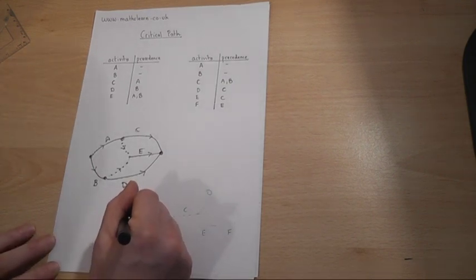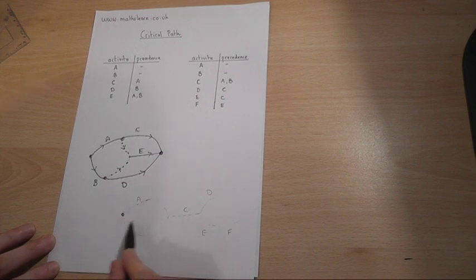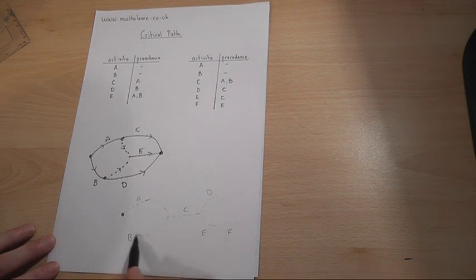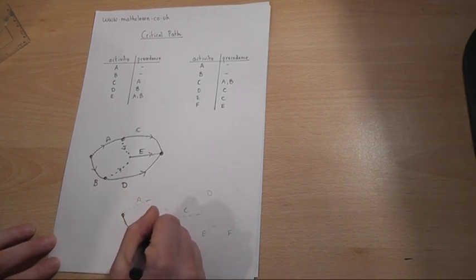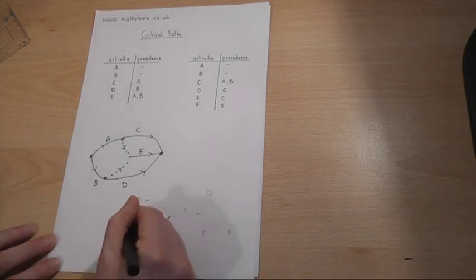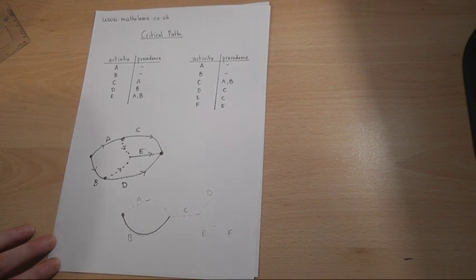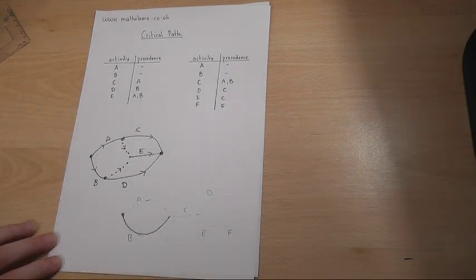Now we have a start and A and B. Now A and B lead to this one point directly. Now there's a quirk, if you like, of this which says you can't have two solid arcs which start and finish at the same node.